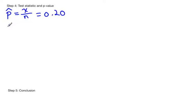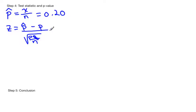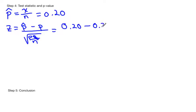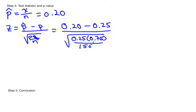Now we can get our test statistic. The formula is: z = (P-hat − P) / sqrt(P × Q / N). P-hat is 0.20, P from H0 is 0.25, Q is 1 − 0.25 = 0.75, and N is 1,501. Plugging into a calculator gives a test statistic of negative 4.47.